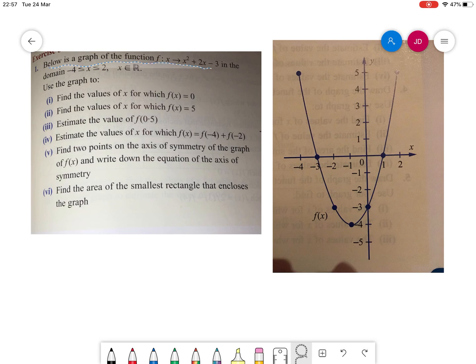Below is a graph of the function f(x) = x² + 2x - 3 in the domain -4 ≤ x ≤ 2.